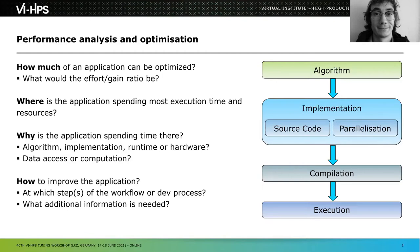Applications solve problems using code patterns that express mathematical or physics equations. Once you have the application working, you need to figure out where within it you should spend time trying to gain performance. There might be spots with I/O to disk or network, or code patterns doing memory access. You have to figure out how much time is spent in each part, whether those parts are optimizable, and how much optimization can be deployed — and whether it's worth doing at all.